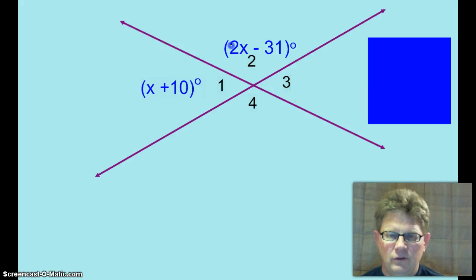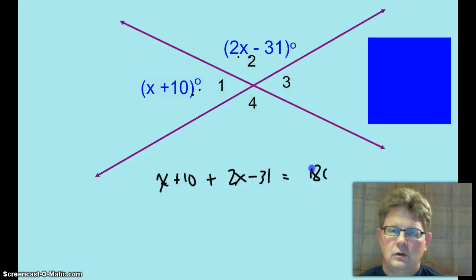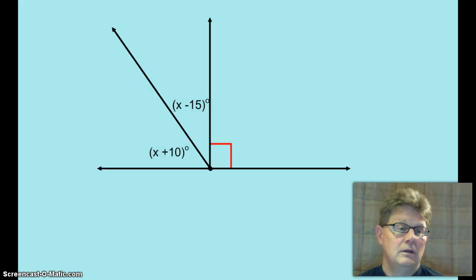Again, look, those vertical angles are congruent to each other. There's never a time that vertical angles will not be congruent to each other. Let me get that out of the way just for a second and let me do a little bit of fun magic here. Okay, we're going to set up the equation right there.